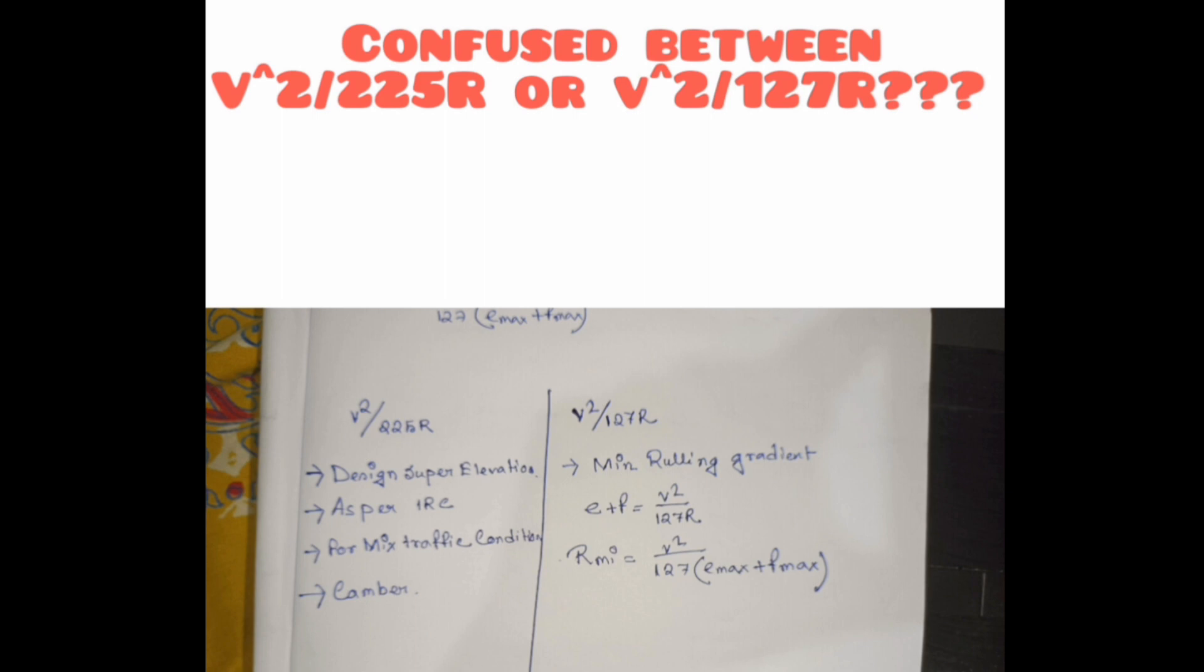So in this video I am going to discuss about this. If we see in the question the terminology like design super elevation as per IRC for mixed design condition, camber in percentage, we will use v squared by 225r to find out super elevation.